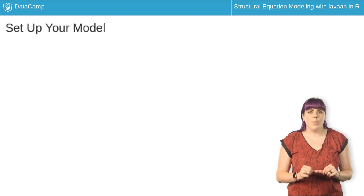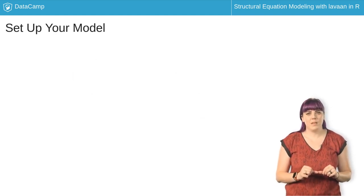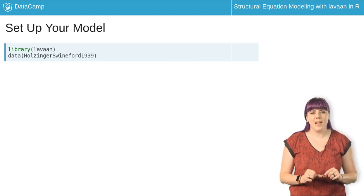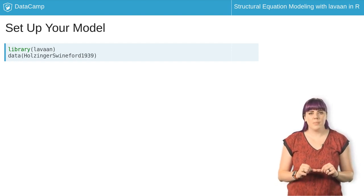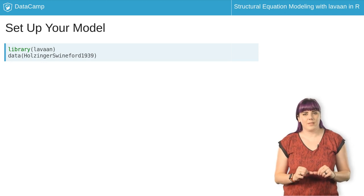Let's create a one-factor model of the Holsinger and Swineford 1939 dataset. This dataset contains nine manifest variables measuring the mental ability of children, covering visual tasks, writing, word comprehension, and processing speed tasks.